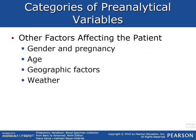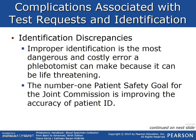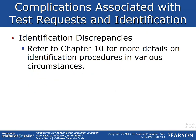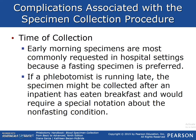Other factors affecting the patient include gender and pregnancy, age, geographical factors, and weather — these will be covered in detail in class. We will also refer to Chapter 10 for more details on identification procedures in various circumstances, and detailed examples of how misidentification happens will be provided in class.